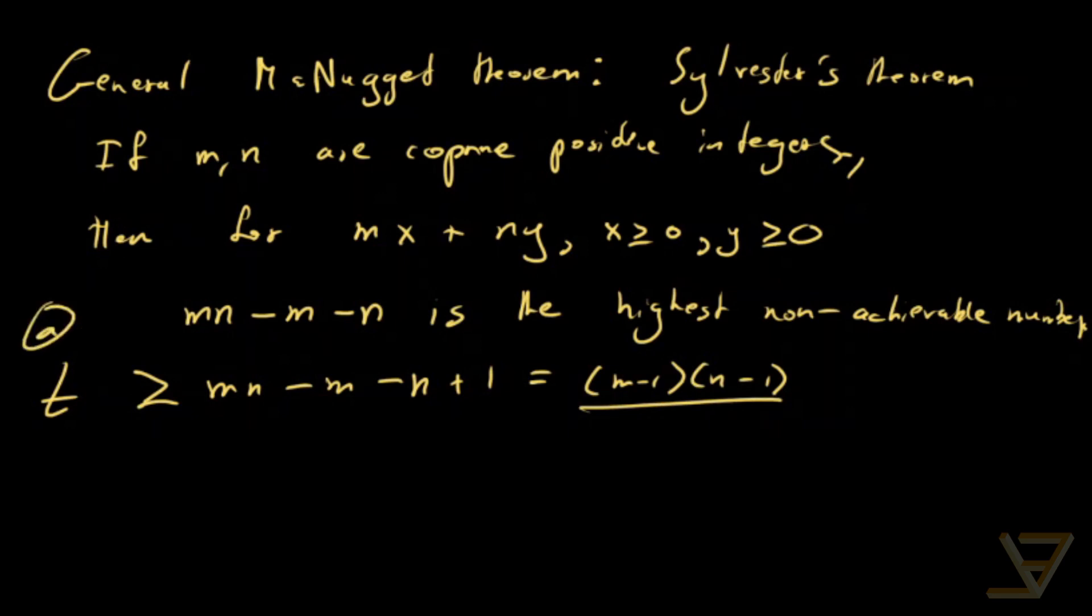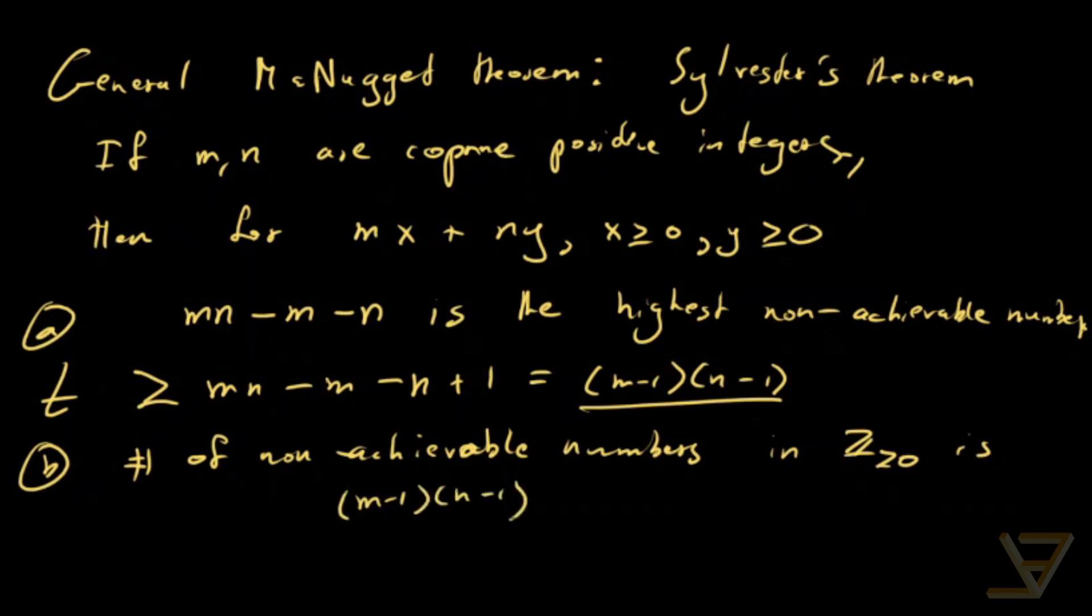So that's the first part of the theorem. The second part of the theorem is that the number of non-achievable numbers in the non-negative integers is (M minus 1)(N minus 1) over 2. So that's the number of non-achievable numbers.